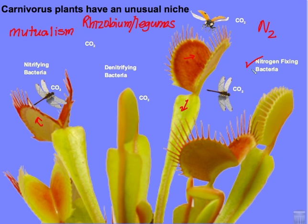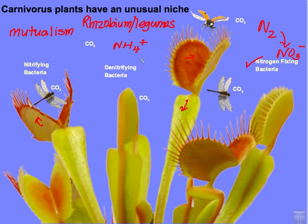Not all nitrogen fixation occurs through root nodule bacteria of leguminous plants. Much of the conversion of gaseous nitrogen into nitrate ions in the soil occurs by means of free-living bacteria in the soil. Another source of nitrates for plants comes from the decomposition of urine, which is rich in ammonia, by other types of bacteria that convert ammonium ions first into nitrites and then into nitrates. These are referred to as the nitrifying bacteria.